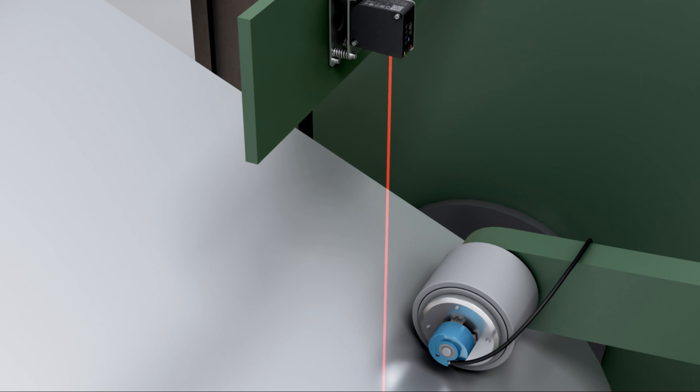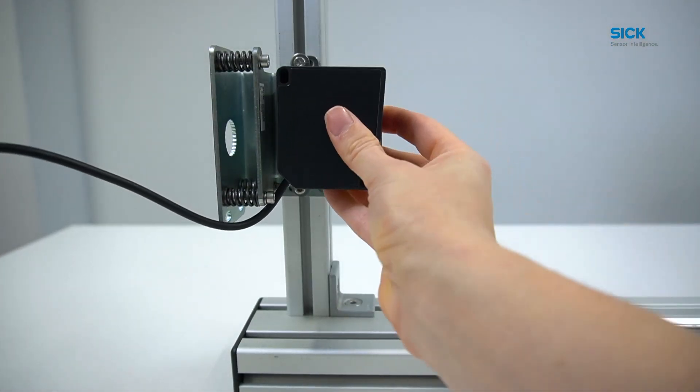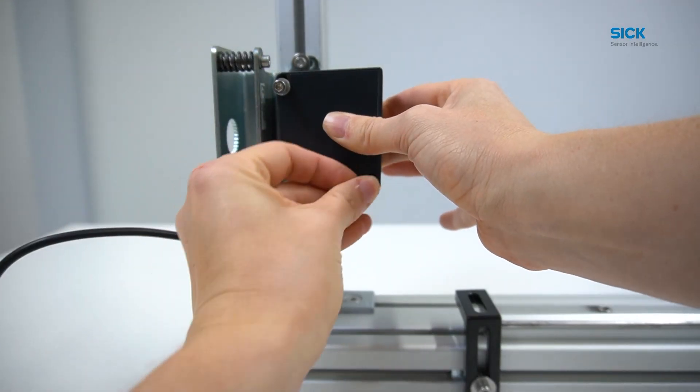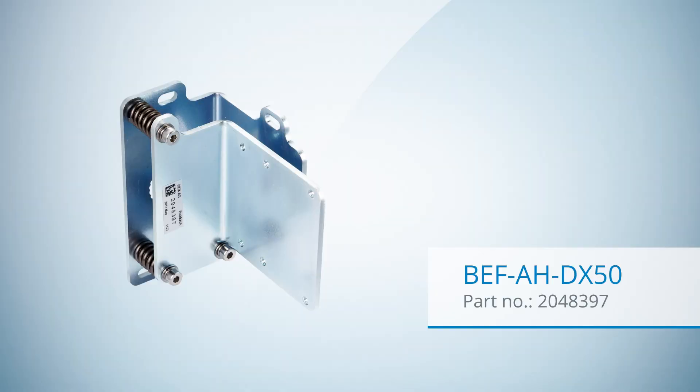From measuring coil diameters to positioning cranes, the DD80 finds applications in a diverse range of tasks. For installing the DD80, you can conveniently reuse the existing mounting equipment of DX50 and DX50-2.